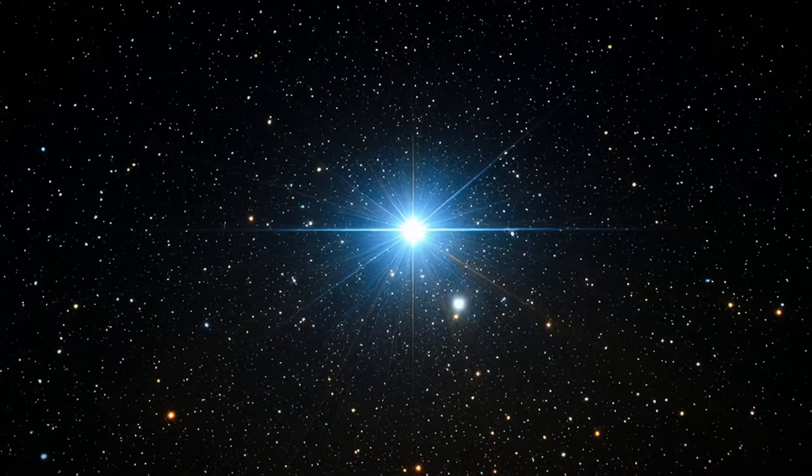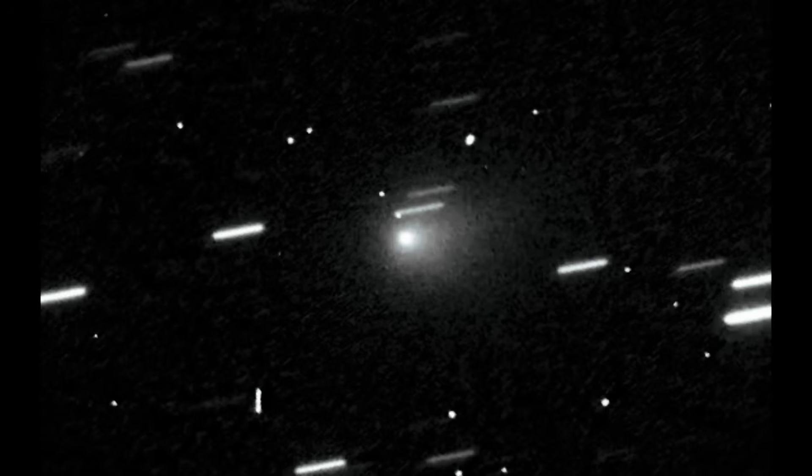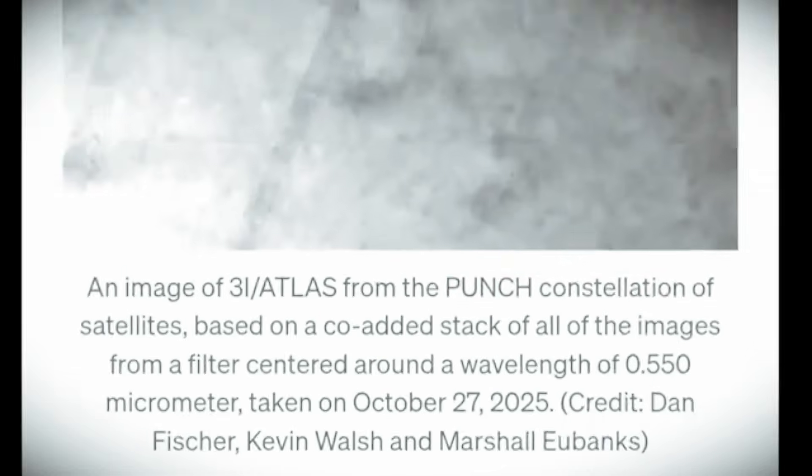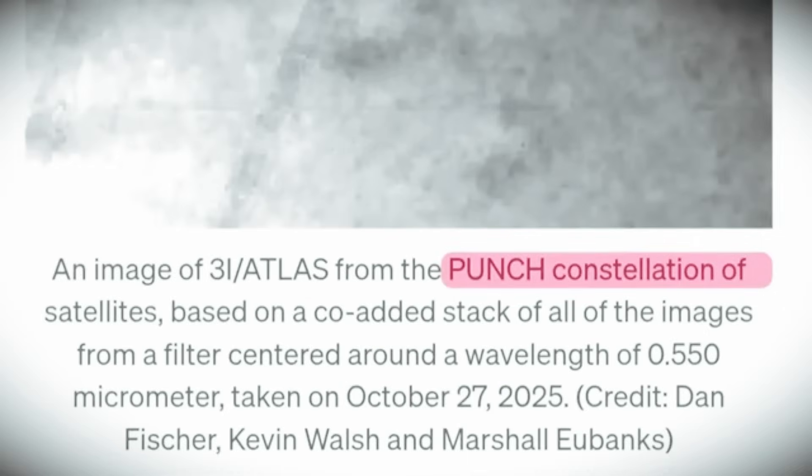The 10 Definitive Atlas Anomalies. 1. Retrograde trajectory nearly aligned with the ecliptic. Atlas entered the solar system following a retrograde orbit, but surprisingly aligned within a few degrees of the planetary orbital plane. Interstellar objects usually arrive from random directions. This alignment is statistically almost impossible.